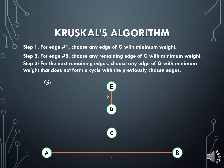For the following steps, we choose the rest of the edges based on the following conditions: we pick any edge of G with minimum weight that does not form a cycle with any of the previously chosen edges. Thus, we can safely choose the edge CB, which has a weight of 3. And lastly, choose the edge AD, which has a weight of 4. We now have a minimum spanning tree for this graph G.